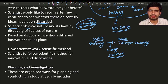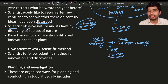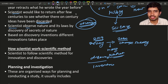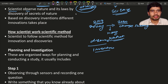Scientists observe nature and its laws by discovering the secrets of nature. In nature there are many secrets, and scientists want to observe and understand the laws present in nature. They can find these laws through discovery and invention. Based on discoveries, inventions, and different innovations, new knowledge takes place.